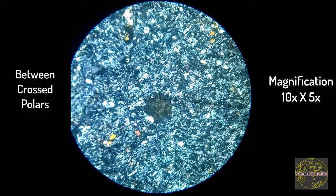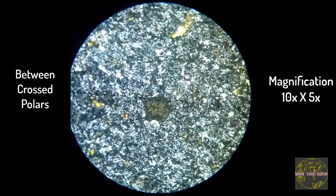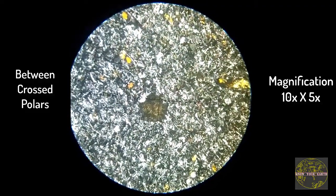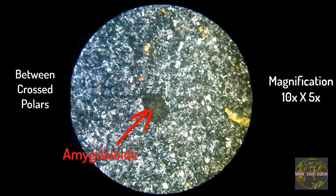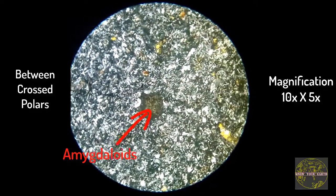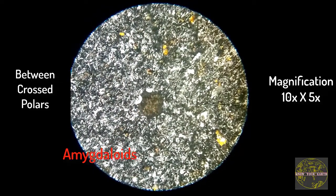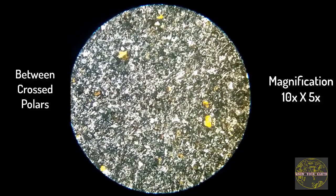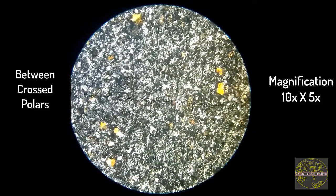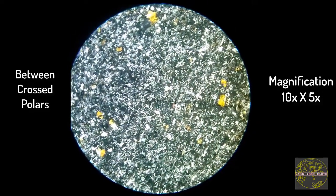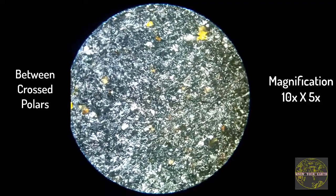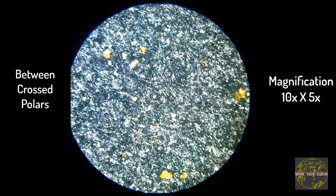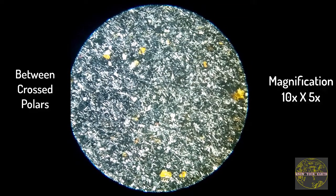Between cross-polars, plagioclase shows a distinct lath shape and zoning might also be observed. Amygdaloids are nothing but vesicles which are filled by secondary minerals such as quartz. Pyroxene shows higher-order interference color, whereas glass is opaque between the cross-polars. The common textures associated with basalt are porphyritic, vitrophyric, ophitic, and subophitic textures.